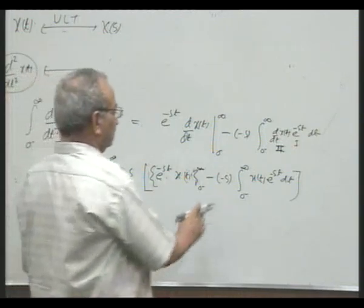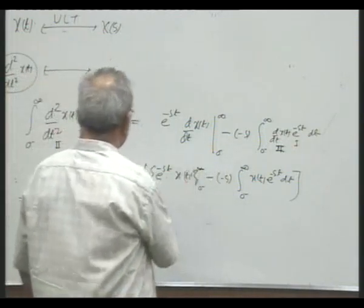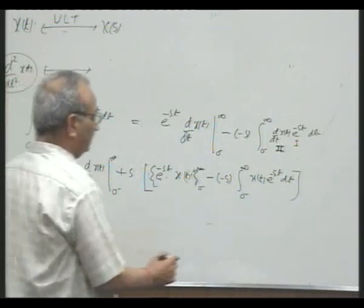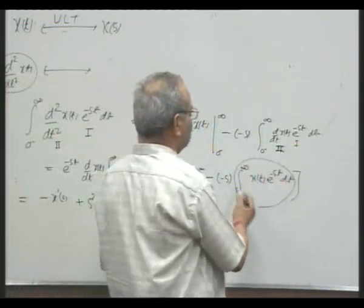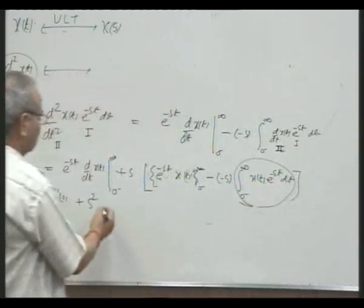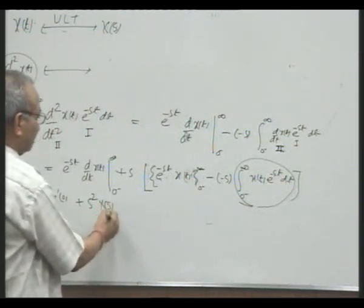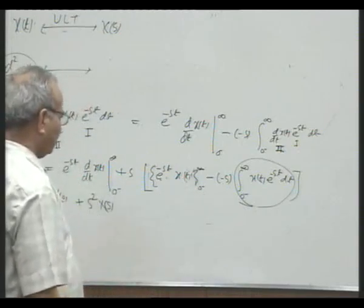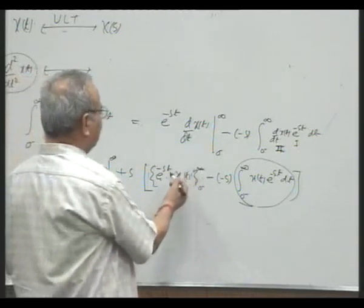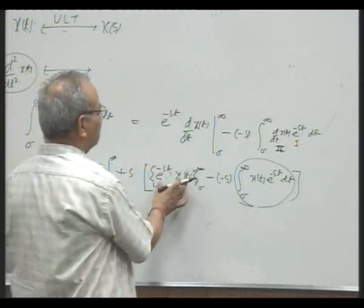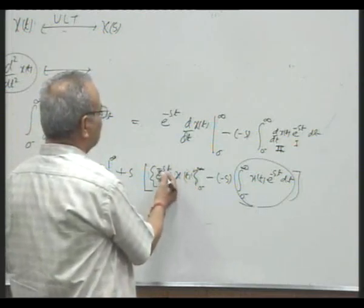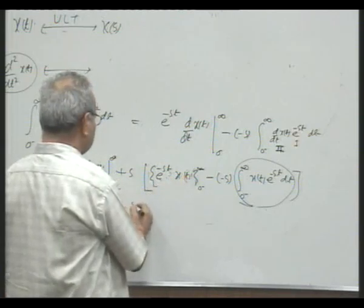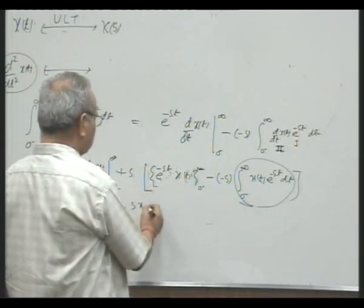Because: expression of the function at the upper limit minus expression at the lower limit — that is why this minus sign. Now, this is minus minus, which becomes plus, multiplied by s. So this becomes s², and this is defined to be X(s). Then, evaluating the remaining term at infinity gives zero, and at zero gives 1 times x(0), so this becomes s·x(0).